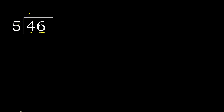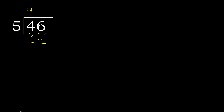5 multiplied by 9 is 45. Ok? 5 multiplied by 9 is 45, which is not greater. Ok? 46 minus 45 is 1.